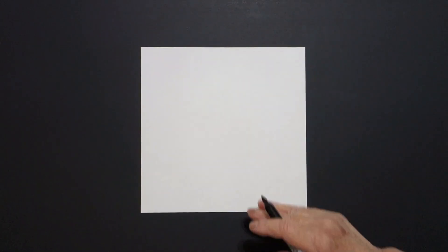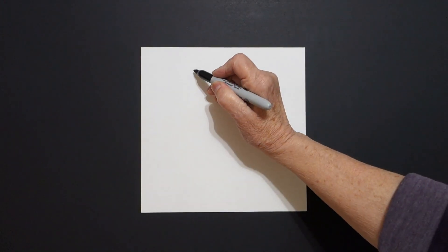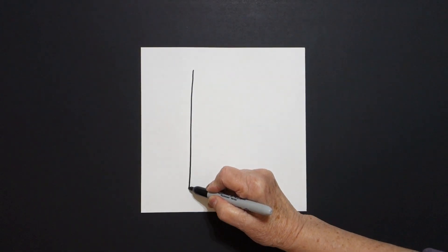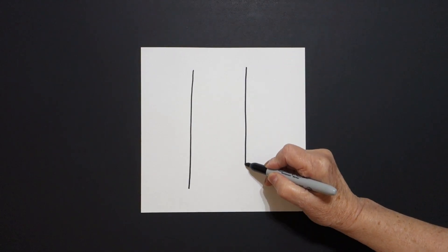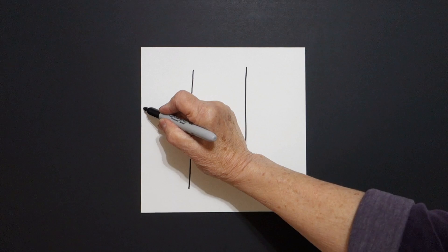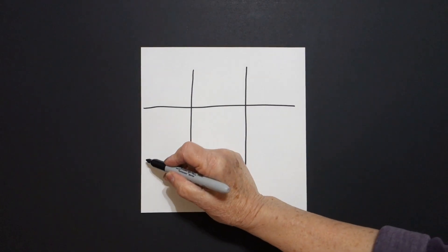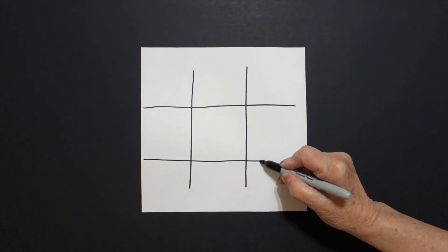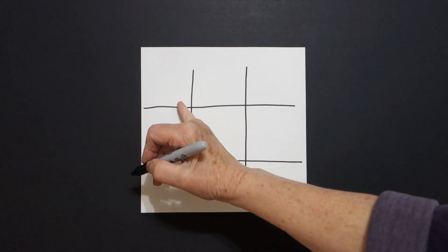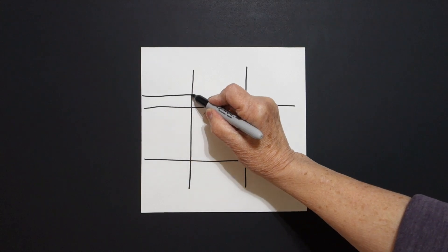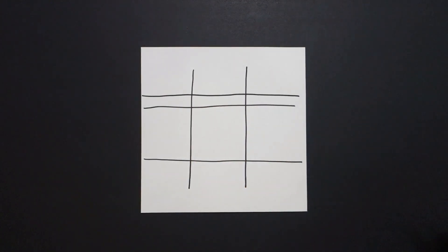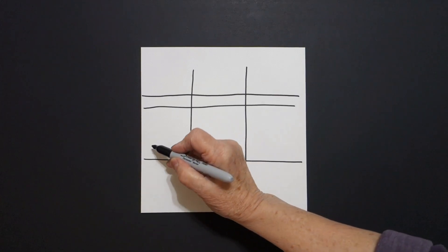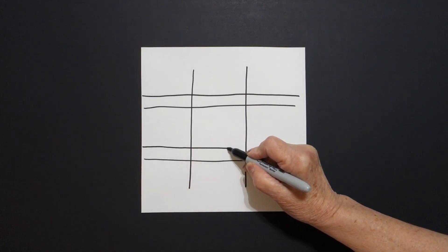Today's project is how to make a chart of tornado categories. The first thing we have to do is set up our paper, and this is a little bit different than normal. We are going to draw a tic-tac-toe graph, so two straight lines going down and two straight lines going across. We're going to come back up to the top and draw another straight line across, and then come down to this line and draw another straight line across.